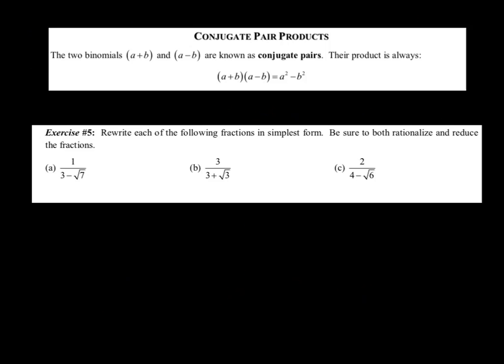To recap: two binomials A plus B and A minus B are known as conjugate pairs. Their product is always A squared minus B squared — those middle terms always cancel.